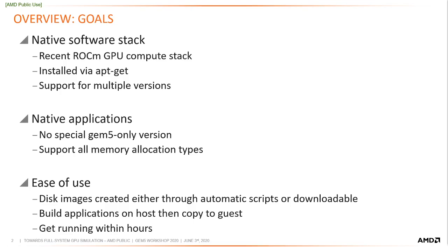For ease of use, our goal is to provide either scripts to automatically download, install, and set up a disk image for GEM5 full system, or to provide a downloadable disk image. Native applications built on the host and applications that run on native hardware will need to be copied to the disk image or secondary benchmarks disk image and run in the simulator directly. With this, we expect the user should be able to set up and run an example GPU application within one day.